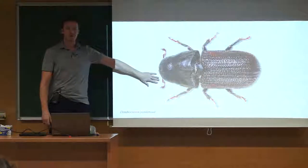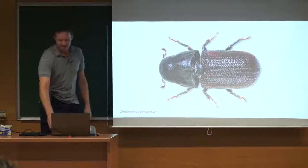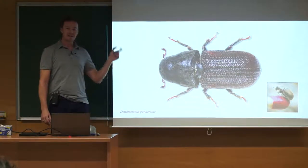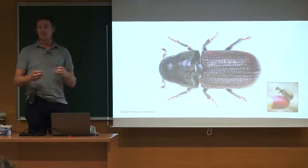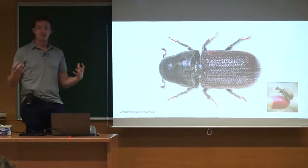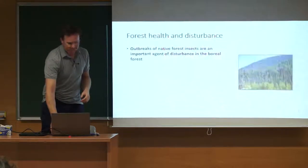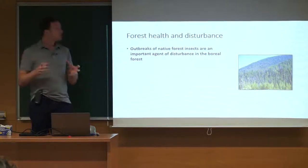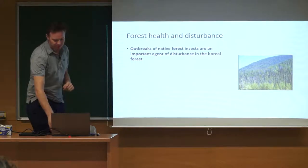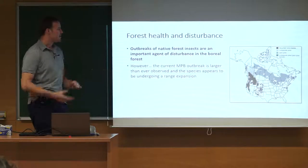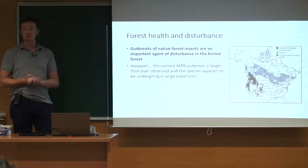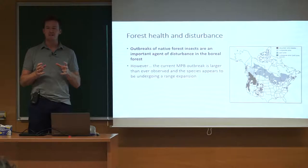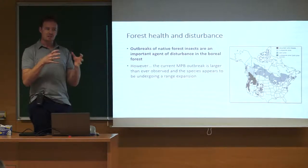This is Dendroctonus ponderosae — quite tiny, the size of a grain of rice. These tiny species, their large population dynamics scale up to ecosystem-level consequences. It's not all bad; these species have a place in the forest ecosystem as an important agent of disturbance and renewal. But currently this outbreak is larger than ever observed and appears to be undergoing range expansion. I'll talk about what's driving this range expansion and how it's managed to escape its historical constraints.